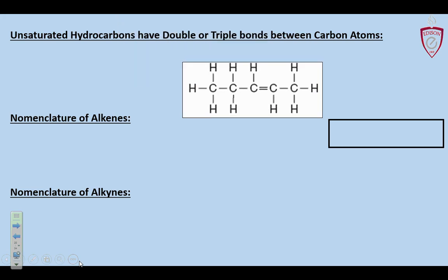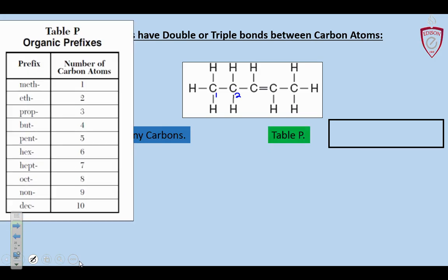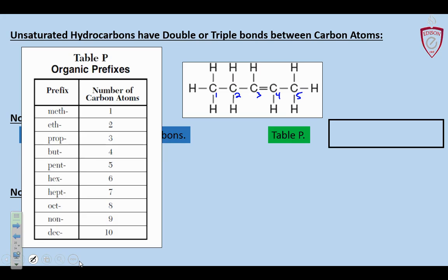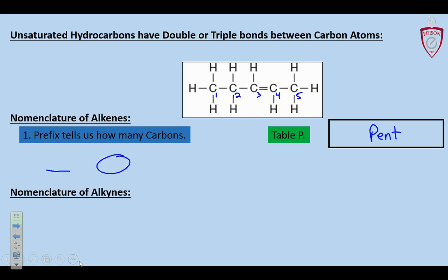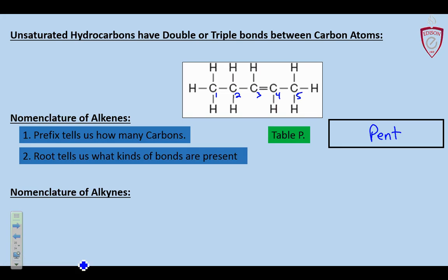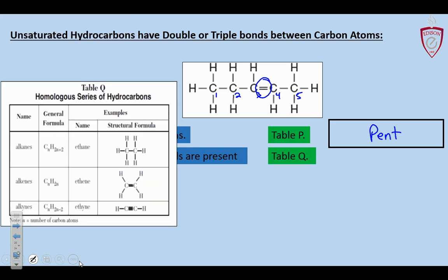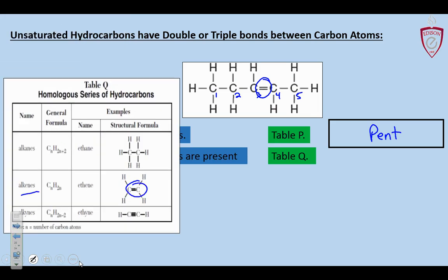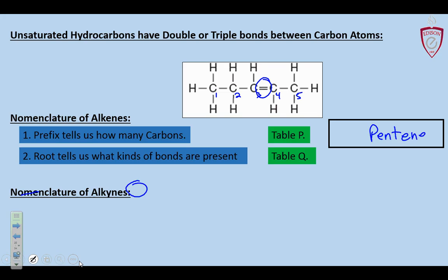So let's get right into nomenclature of alkenes much like last time. The first step in any naming of a hydrocarbon is you tell us how many carbons are present on table P. There are one, two, three, four, five carbons present so we use the prefix pent. We got to find the end or the root of the word so we have to look and see what kind of bonds are present. We see a double bond between carbons and we look at table Q to see which series does that belong to? Alkenes, which tells us the end of the name is E.